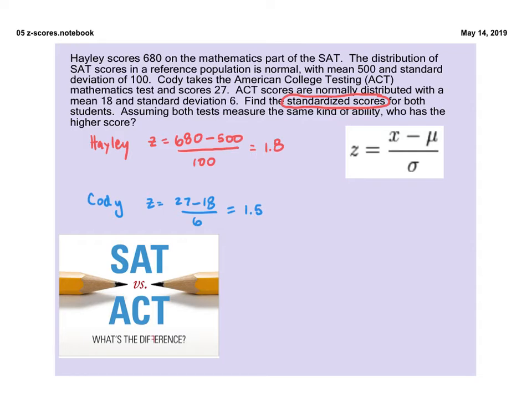So assuming that both tests are measuring the same type of mathematical ability, Haley is going to have a higher score than Cody because it's as simple as this. Haley's z-score is showing us that she is further from the mean in the positive direction than Cody. So she is 1.8 standard deviations from the mean versus Cody, who is 1.5 standard deviations from the mean. So Haley scored better, assuming that it's testing the same mathematical ability.